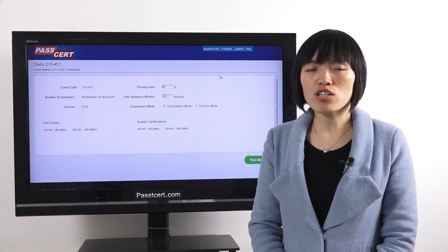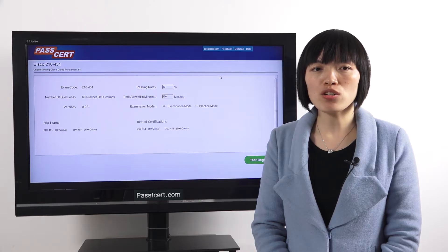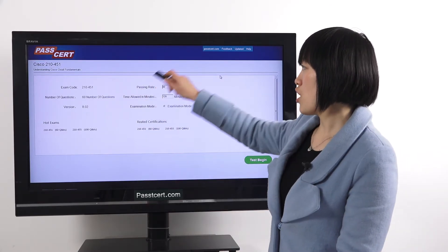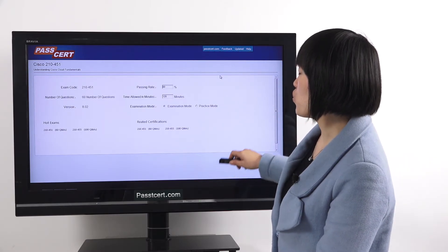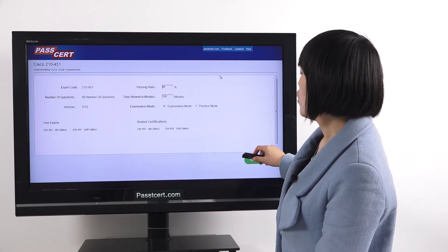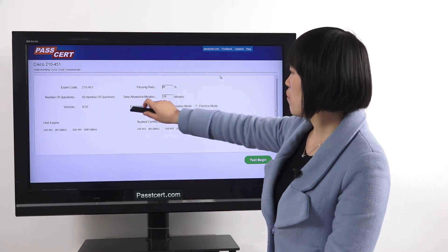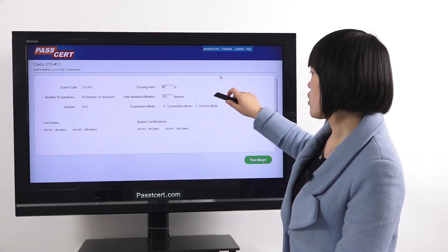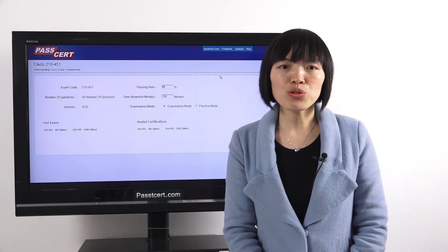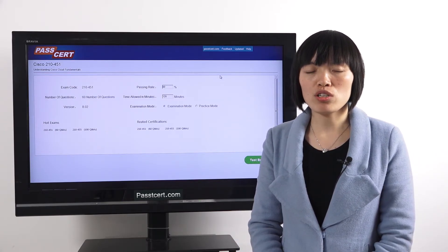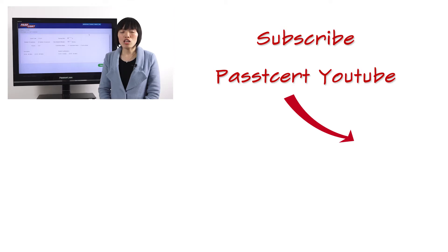Software version is also important in your preparation. You can feel the real exam environment. This is the home page of our 210-451 software version. You can check the number of questions, the version number, the passing rate, the limited minutes. There are two modes in our software version: one is practice mode, the other is examination mode. You can also have a try.